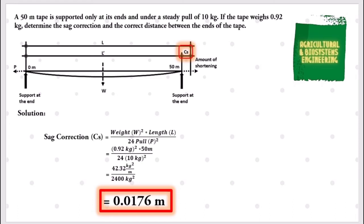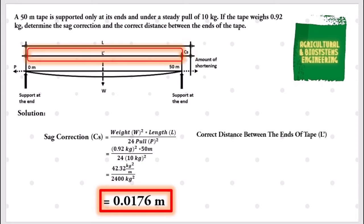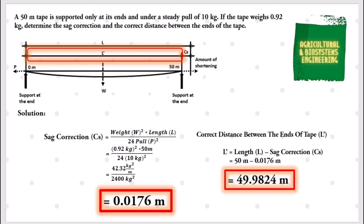Lastly, we will solve for the correct length or distance between the ends of the tape. The formula is: correct length equals the tape length minus the sag correction. We already have the tape length of 50 meters, and we solved for the sag correction. Substituting: 50 meters minus 0.0176 meters. The correct length or distance between the ends of the tape is 49.9824 meters.